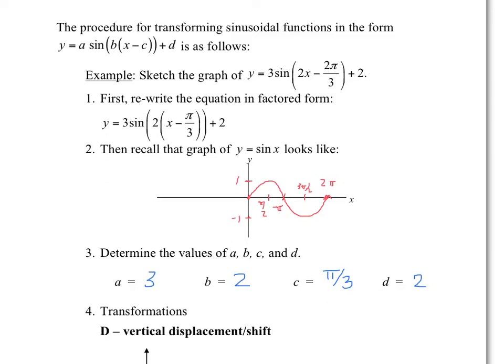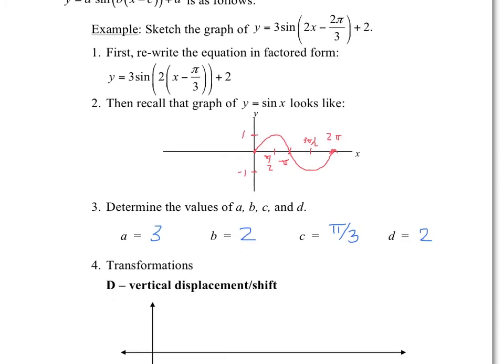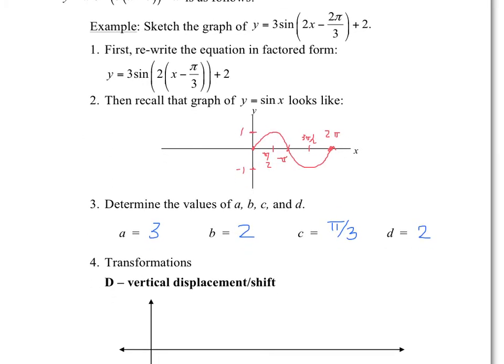These transformations act exactly like they did in the previous unit. A is a vertical stretch or compression. B is a horizontal stretch or compression. C is a translation left or right. And D is a movement up or down by the value of D.